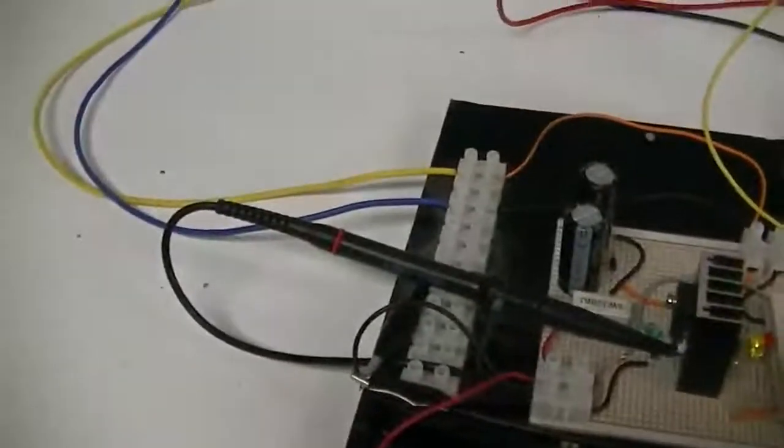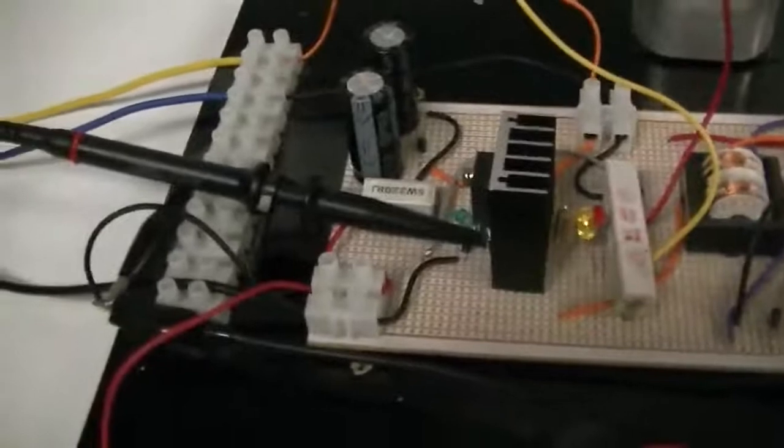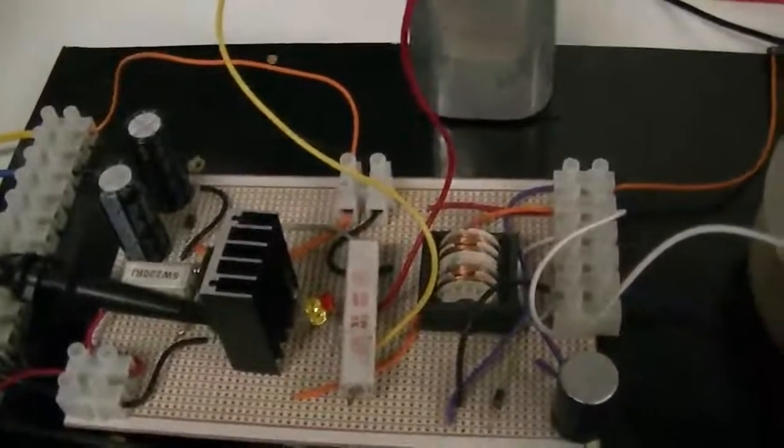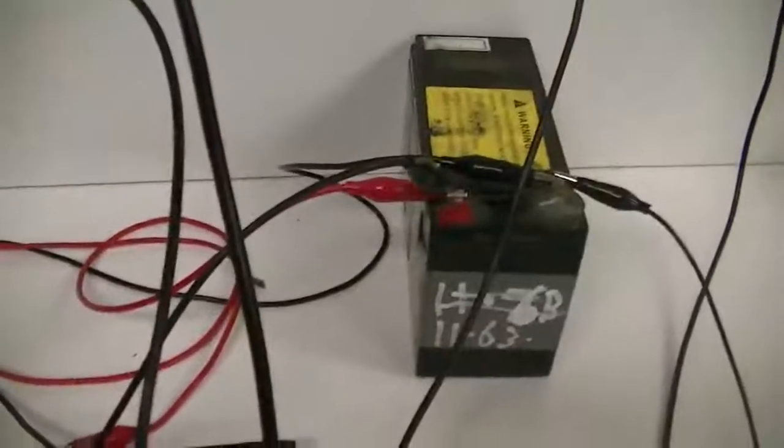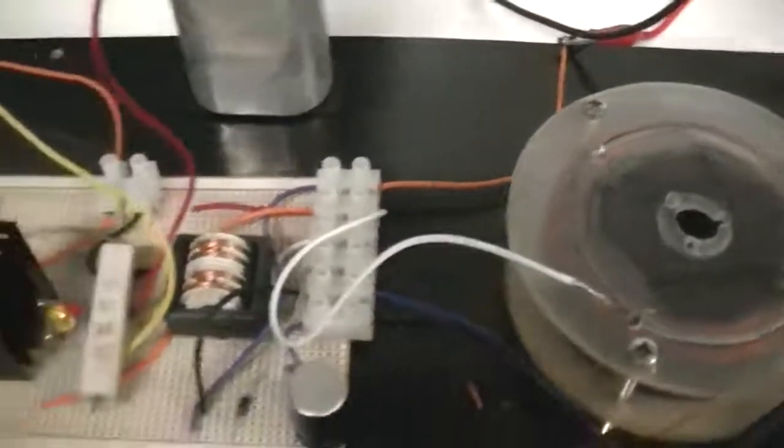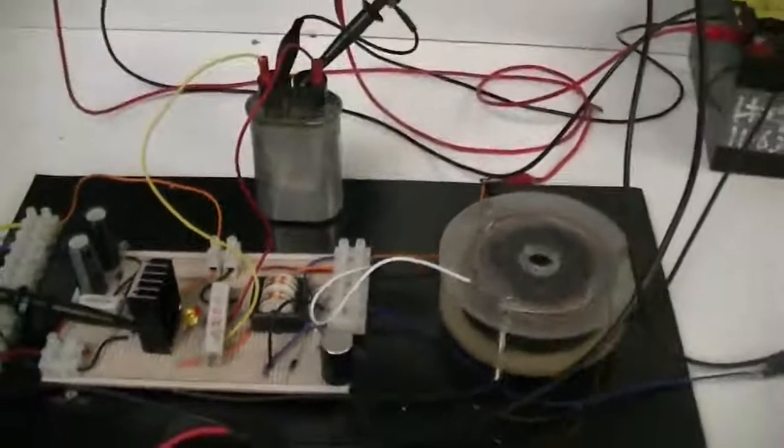Alright so next video like I said we're going to chuck a 1 ohm resistor across the input. We'll have to do it on the negative side of course because my scope shares common ground with the power supply. Unfortunately it's not isolated so we kind of have to do it back to front but it will definitely show us exactly what happens when we connect another load to the total output of this transformer. Cheers guys.